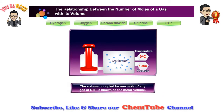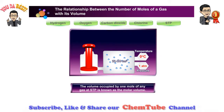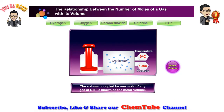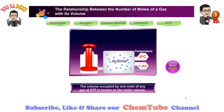The volume occupied by one mole of any gas at STP is known as the molar volume. Click on oxygen, carbon dioxide, and chlorine to see their molar volume.